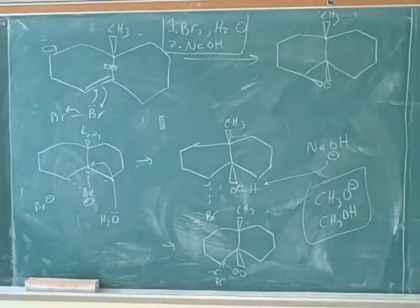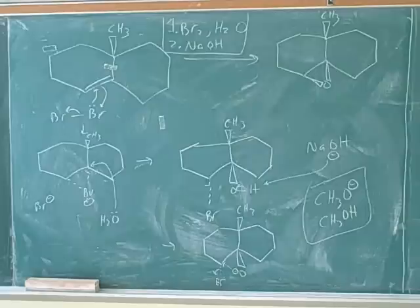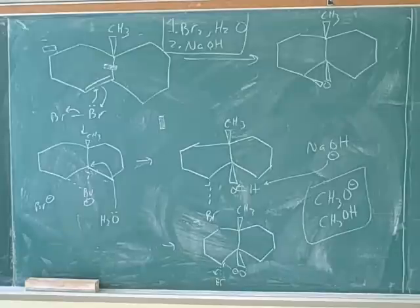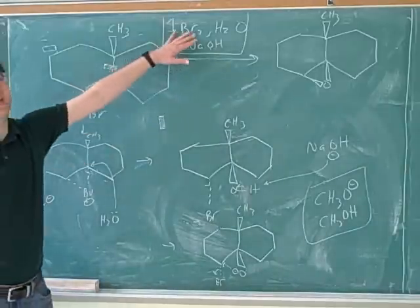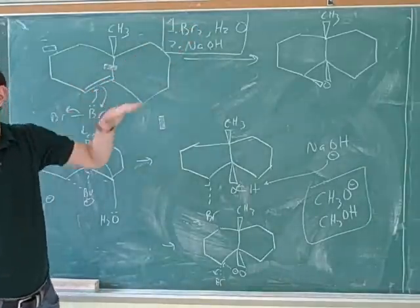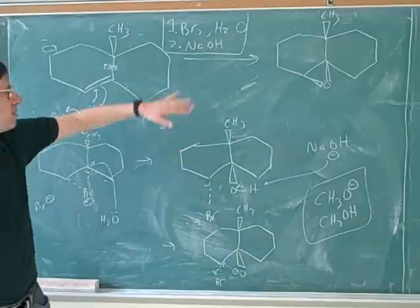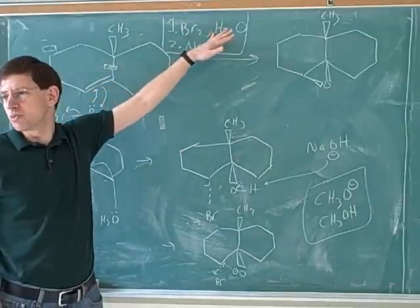And how can you get an alcohol and a halogen on adjacent carbons? By using this approach over here. So in order to get the alcohol and the halogen on adjacent carbons, you can use the diatomic halogen plus water approach.